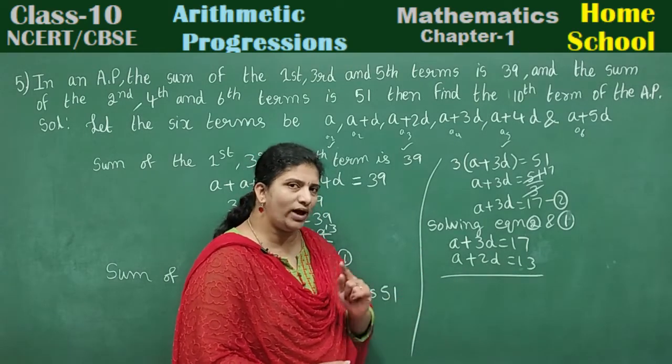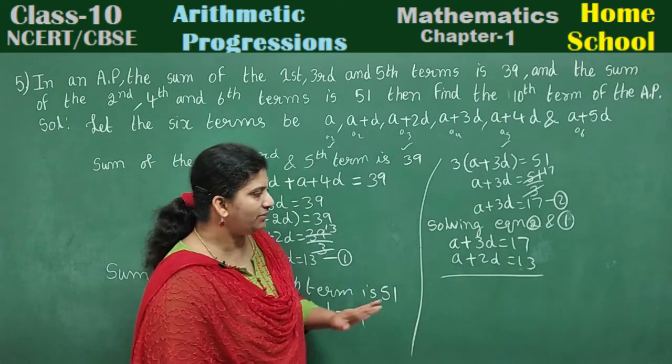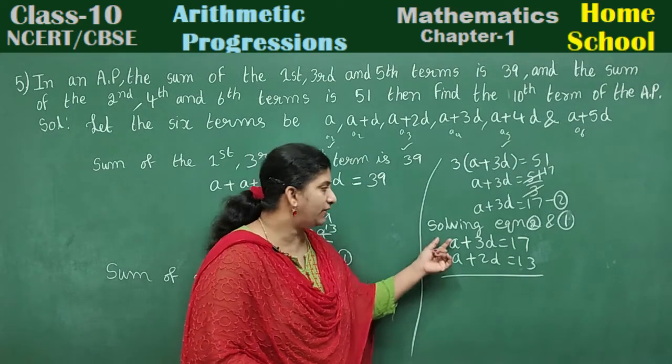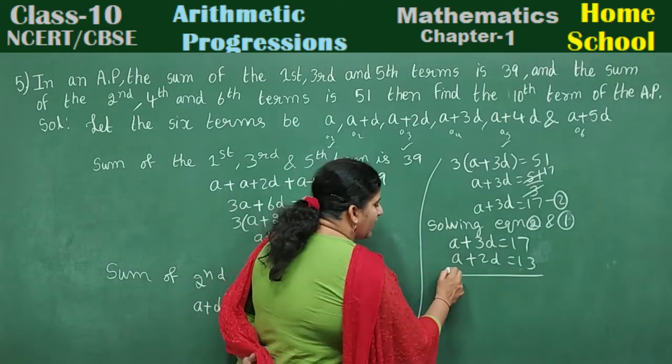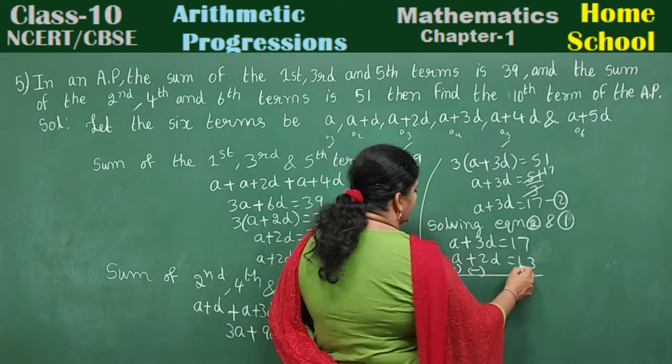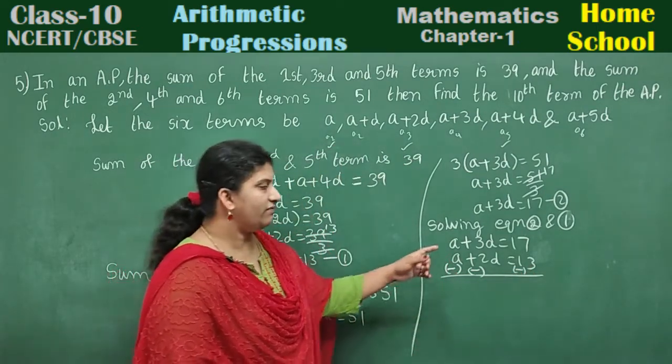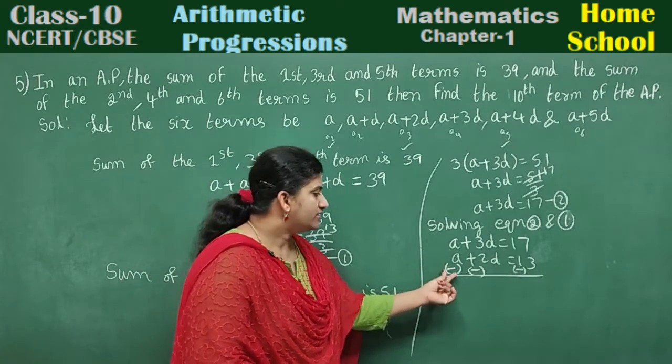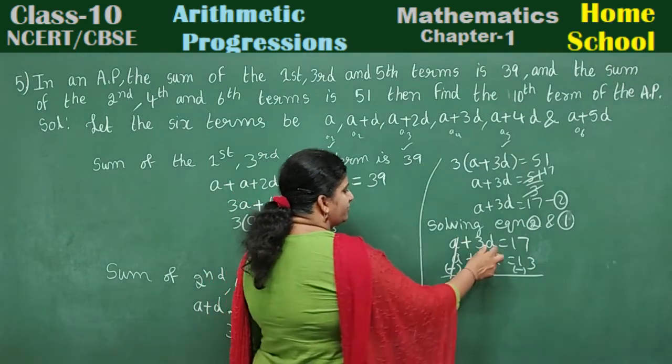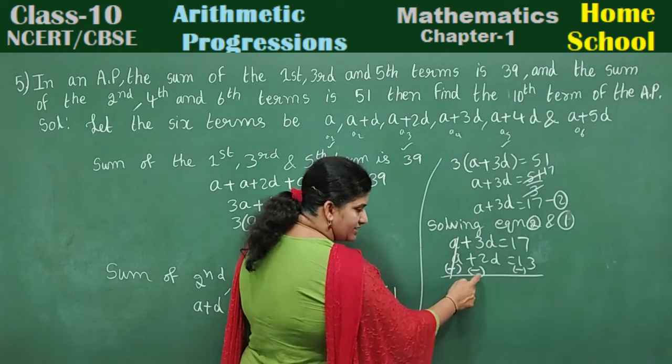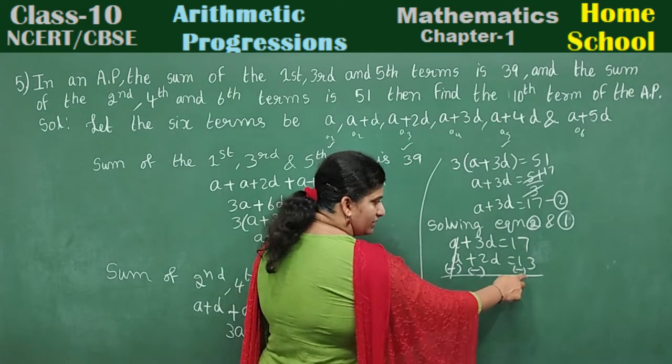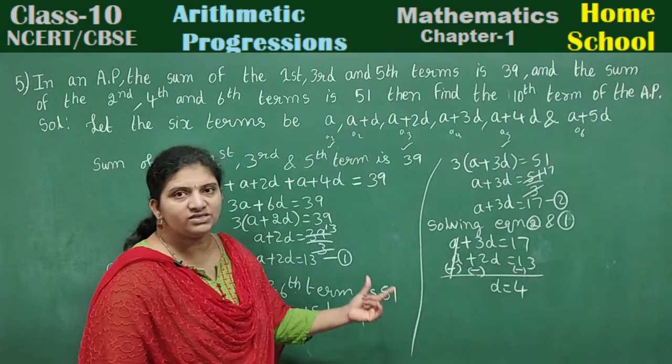Both are having same sign, so we subtract. When we subtract, signs will be changed. Plus A minus A cancel. 3d minus 2d equals d. 17 minus 13 equals 4. So d value is 4. D is nothing but the common difference.